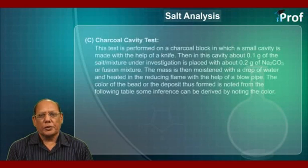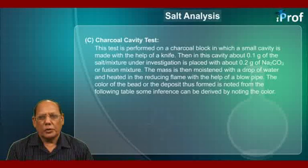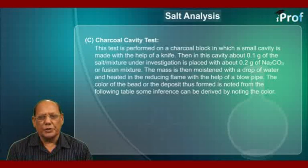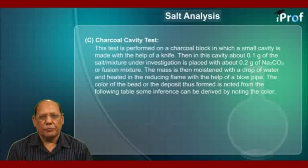Charcoal Cavity Test. This test is performed on a charcoal block in which a small cavity is made with the help of a knife. Then in this cavity, about 0.1 gram of the salt or mixture under investigation is placed, with about 0.2 grams of sodium carbonate or fusion mixture. The mass is then moistened with a drop of water and heated in the reducing flame with the help of a blowpipe.